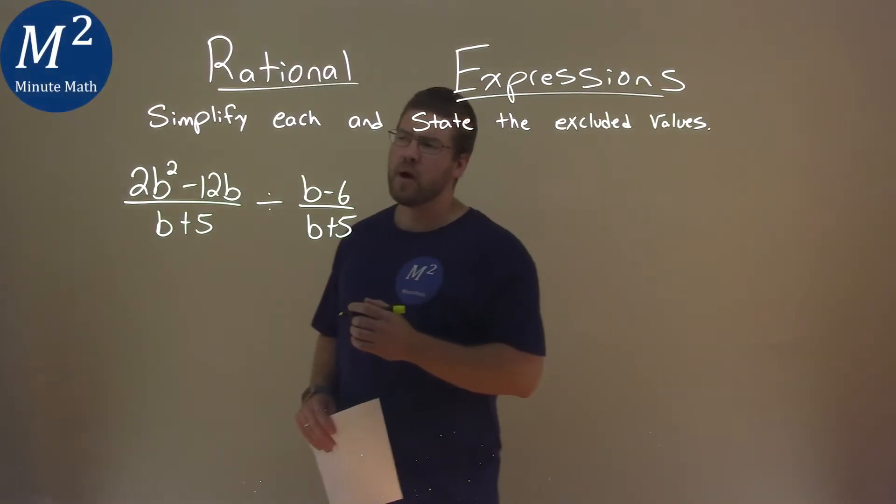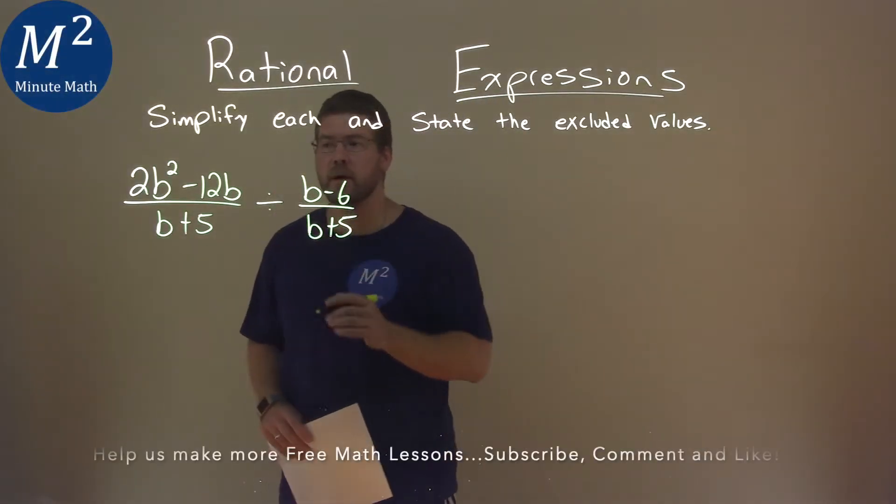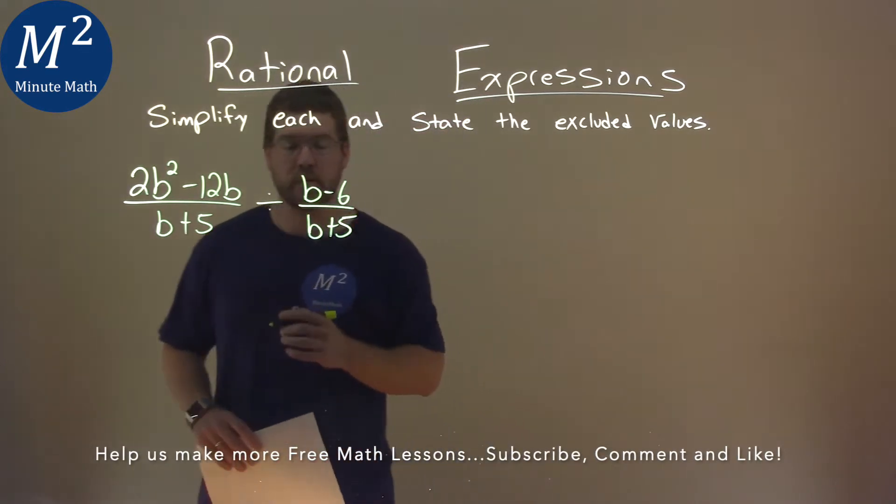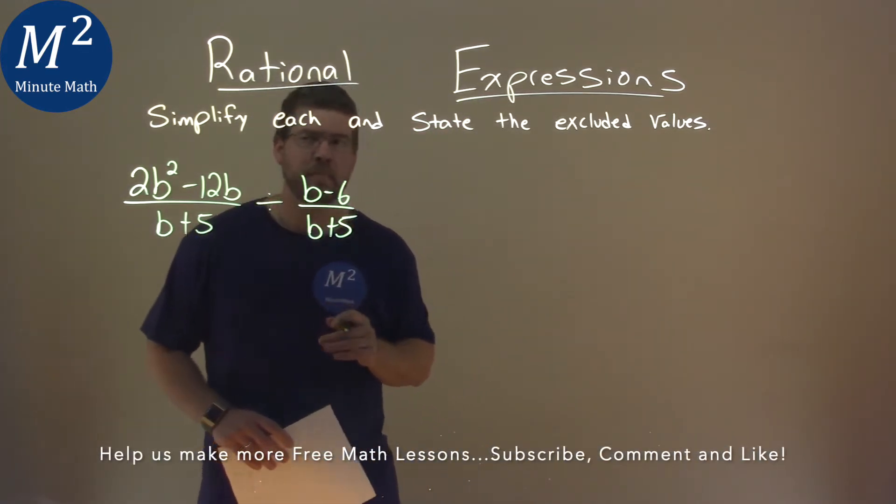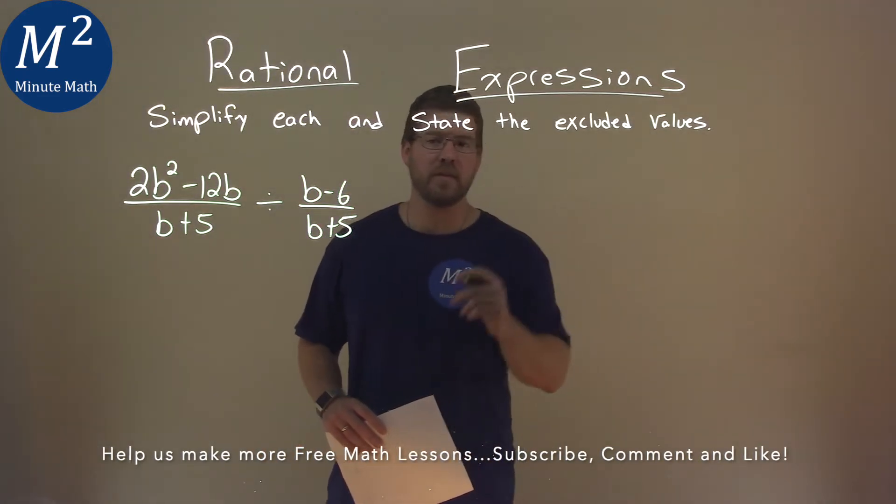We're given this problem right here. 2b squared minus 12b over b plus 5, divided by b minus 6 over b plus 5. And we need to simplify this and state the excluded values.